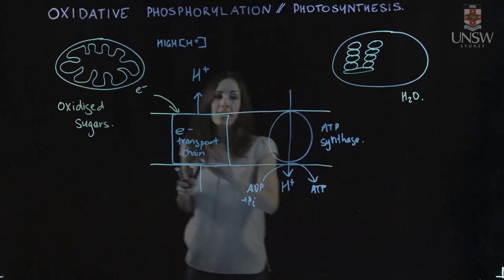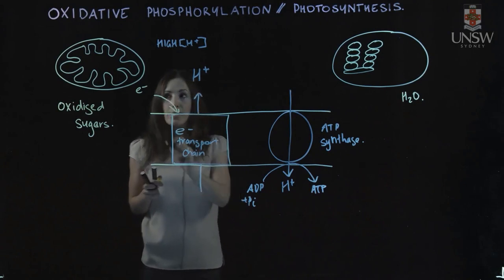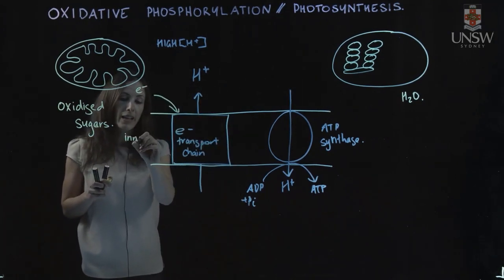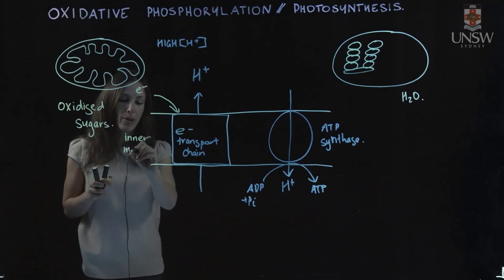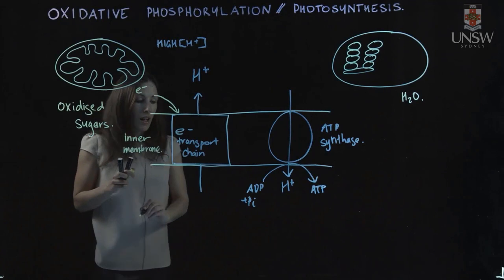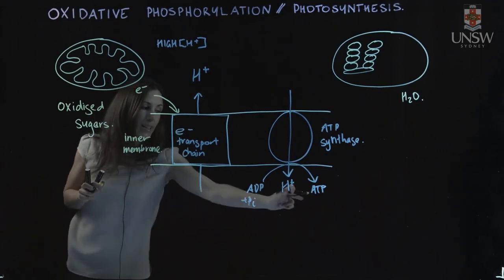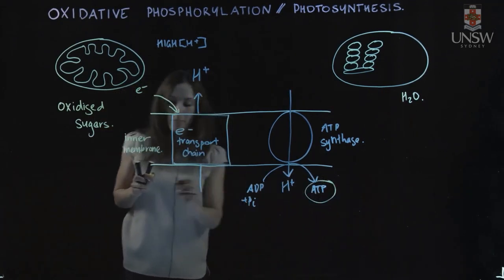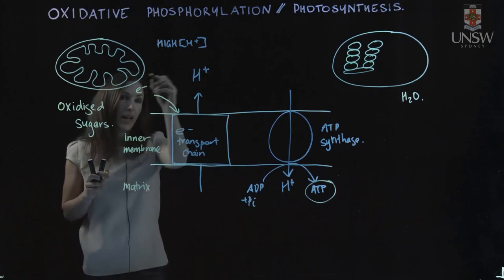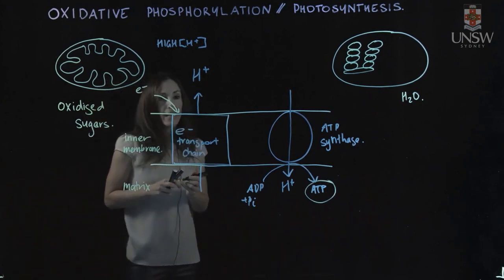The other differences is the membrane where this occurs. So in mitochondria, this is occurring over the inner mitochondrial membrane, and down the bottom where the ATP is being made is our mitochondrial matrix, and out in this area is our intermembrane space.